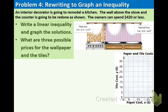You are going to remodel a kitchen. The wall above the stove and the counter is going to be redone as shown in the picture. The owners, aka you, can spend $420 or less.